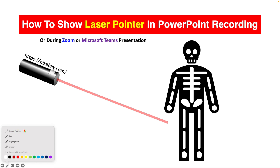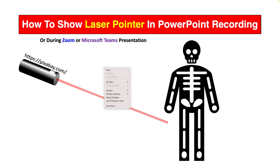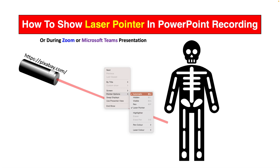Just click on the option and now you will start to see this red laser pointer. If you want to change the color of this laser pointer, just right-click on the screen and use your keyboard to go to the pointer option, and then under the laser color, select the option green or blue.